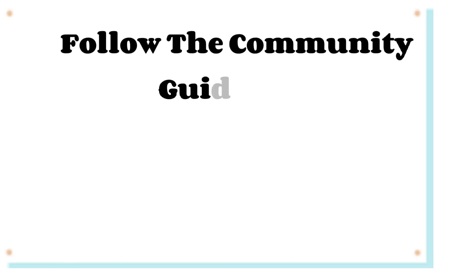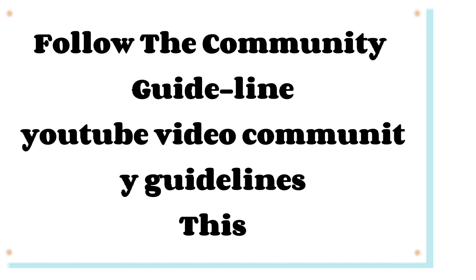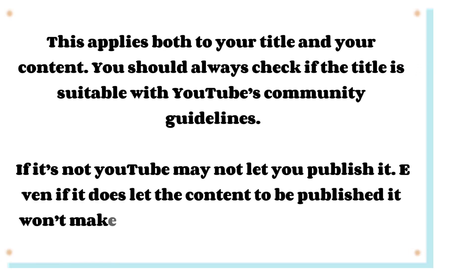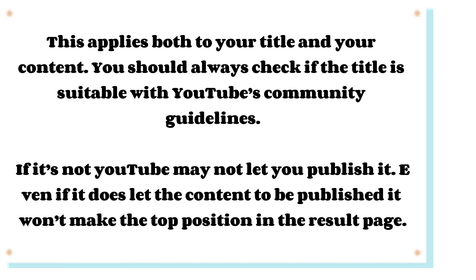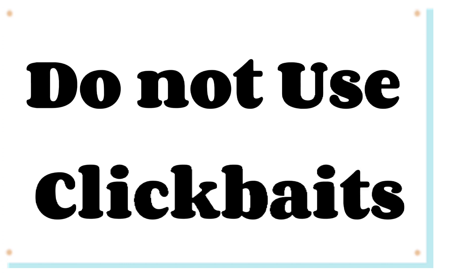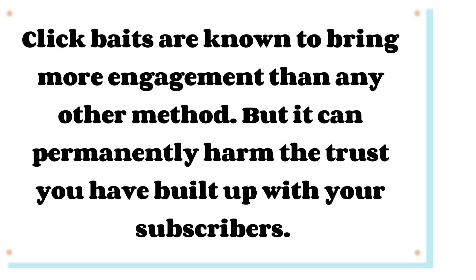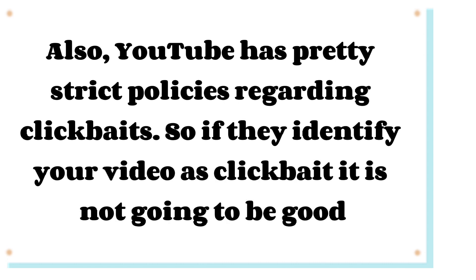Tip 17: Follow the Community Guidelines. This applies to both your title and your content. Always check that your title complies with YouTube's community guidelines — if it doesn't, YouTube may not let you publish it, or it won't rank at the top of results. Tip 18: Do Not Use Clickbait. Clickbaits may bring more engagement but can permanently harm the trust built with your subscribers. YouTube also has strict policies regarding clickbait, so if your video is identified as clickbait, the consequences won't be good.